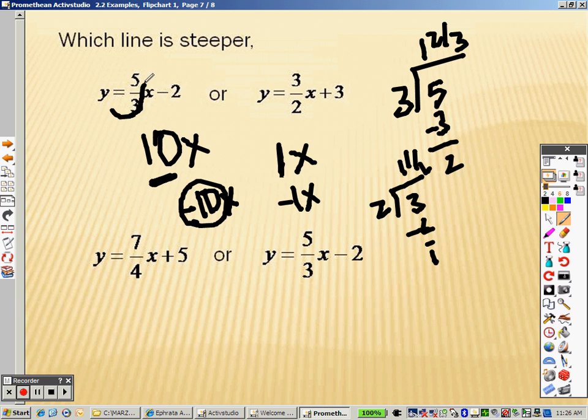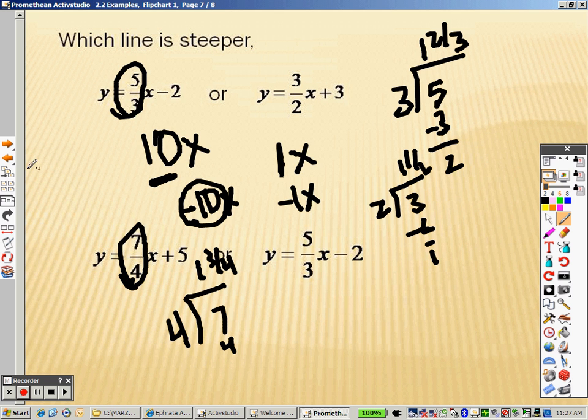Which line is steeper? Well, we already know what 5 thirds is - that's 1 and 2 thirds. Let's figure out what 4 sevenths is. That's 1 and 3 fourths, which is bigger than that. So this line is steeper because that one has a bigger slope.